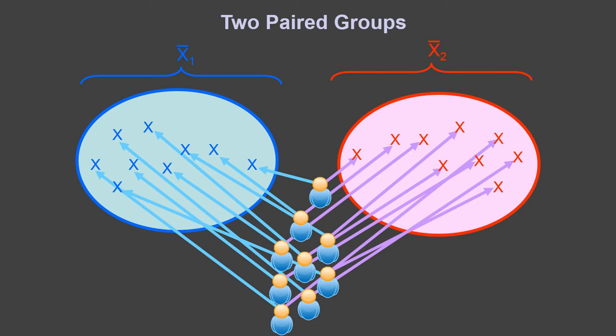You measure something very similar — conceptually and statistically, it has to be basically the same variable. It has to make sense to compare it directly. You wouldn't want to do this with one variable that was SAT scores and the other ACT scores — they're on different scales, so of course there'll be a huge difference. The statistics just test if there's a difference between means; they don't test whether that makes any sense. That's up to you. Make sure things make sense.